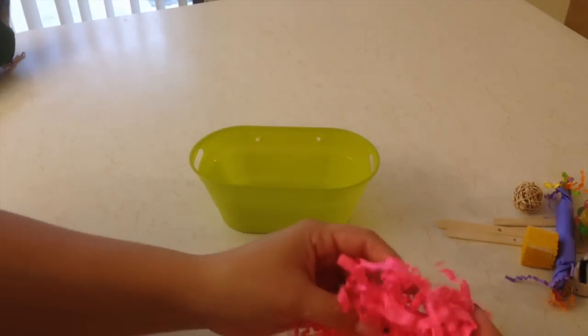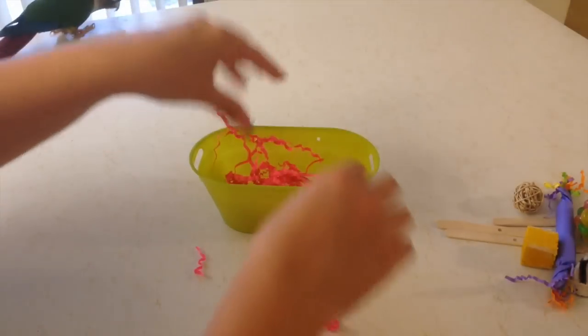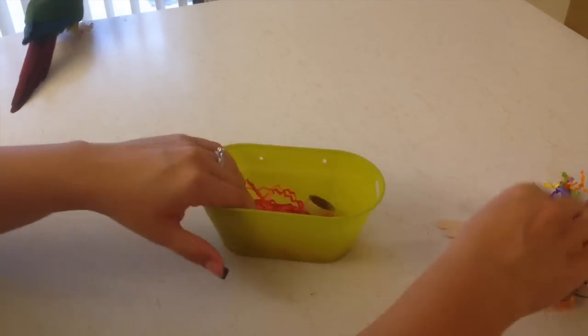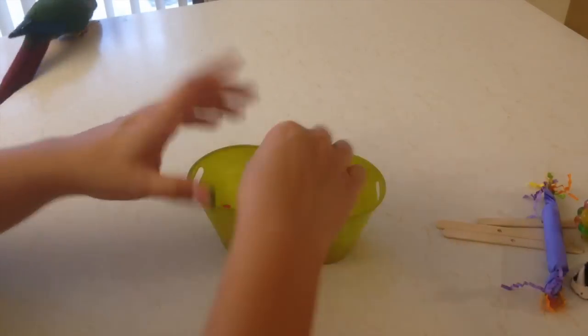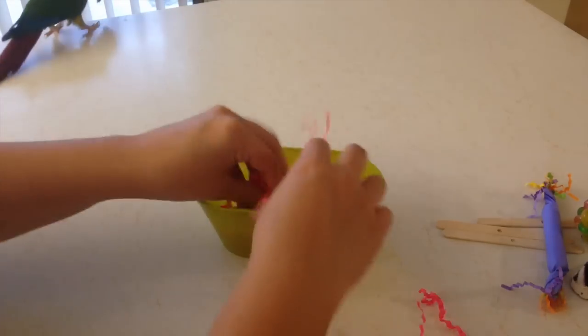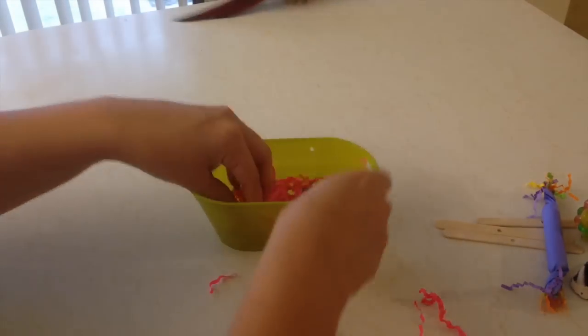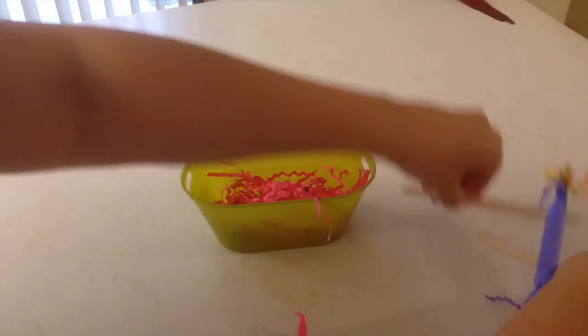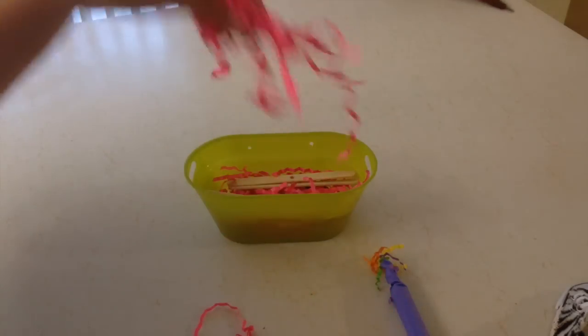And what you want to do is maybe put a little bit of paper at the bottom and just start filling it with your bird's favorite toys. Put a little bit more paper in it and put some more toys in. More paper.